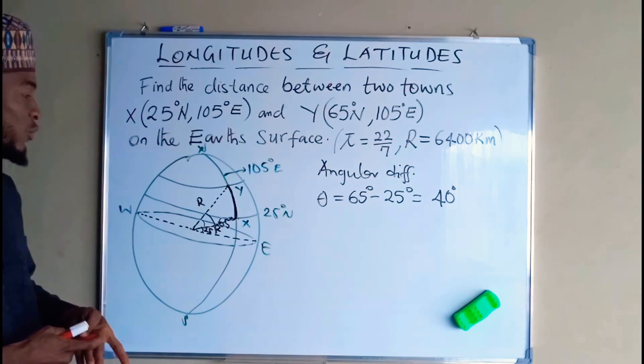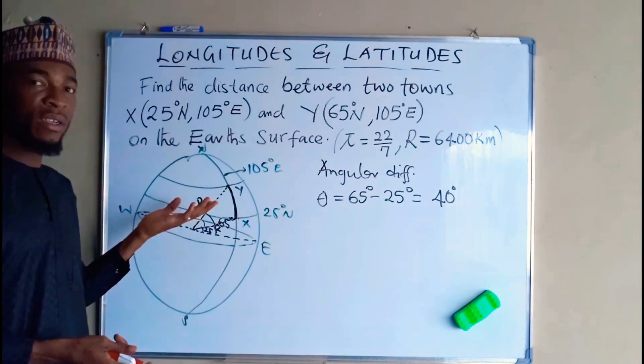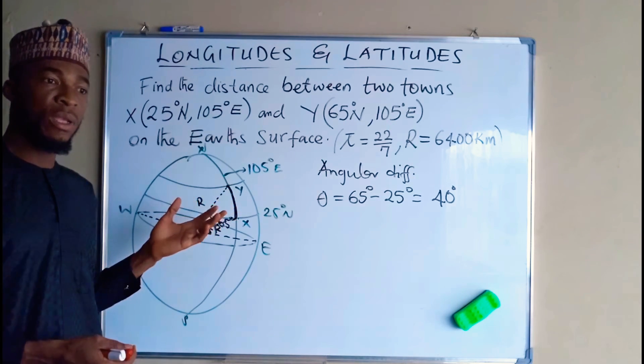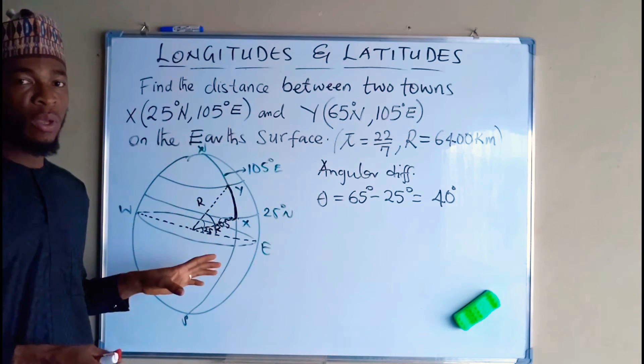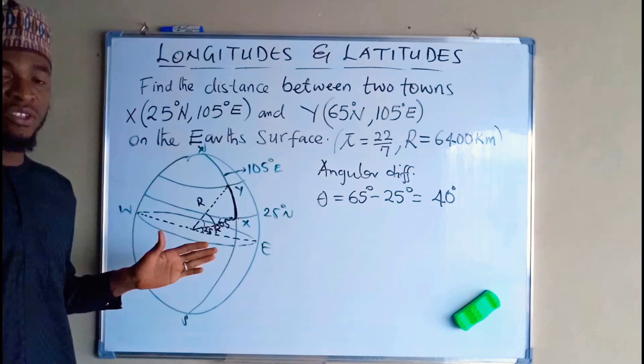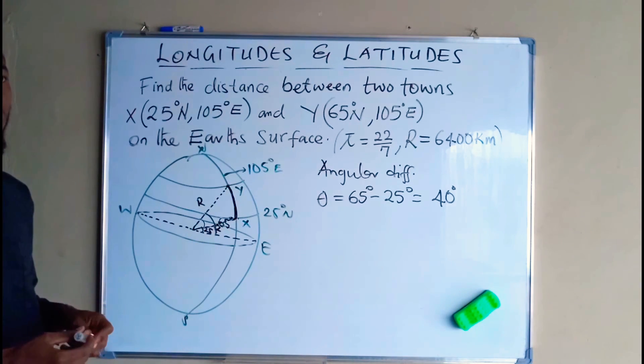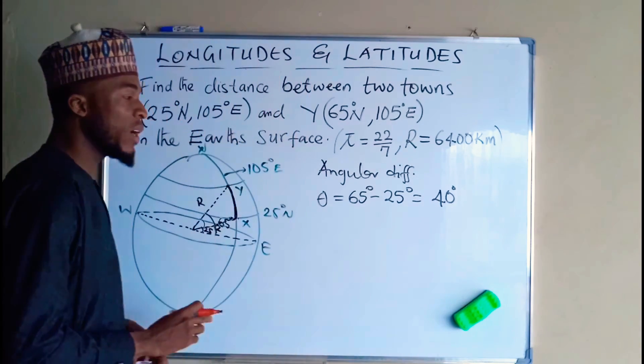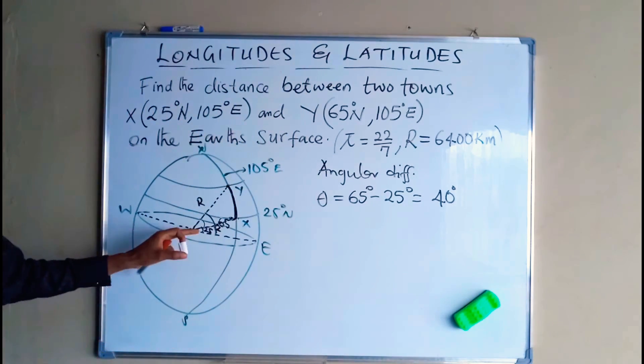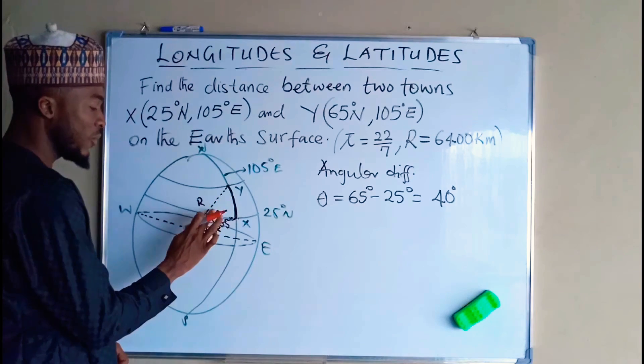In a nutshell, if the two towns are towards the same direction, you take the absolute difference. But if they are on different directions, you add the angle subtended by each of the two towns. This is what we have as our theta, the angle subtended by these two towns, it's 40 degrees.